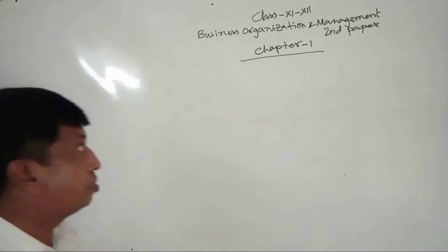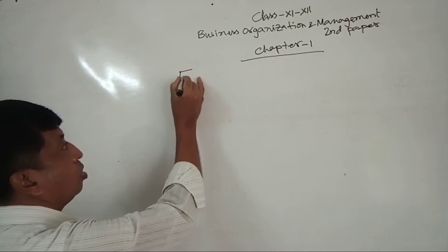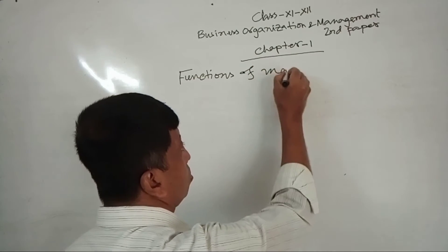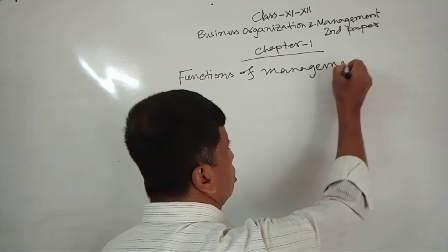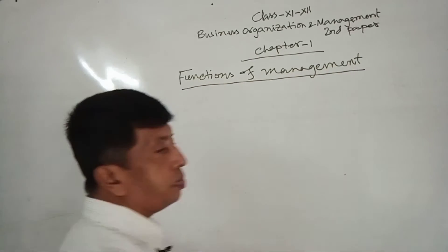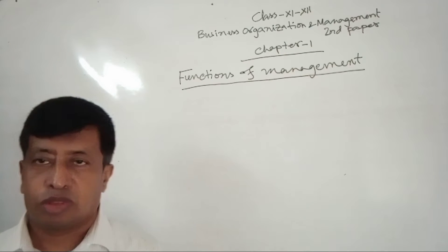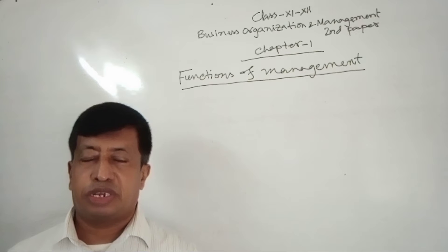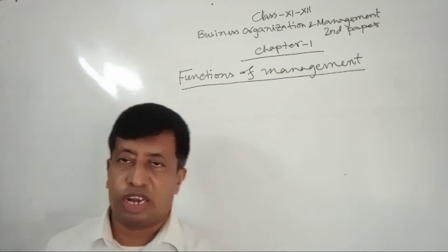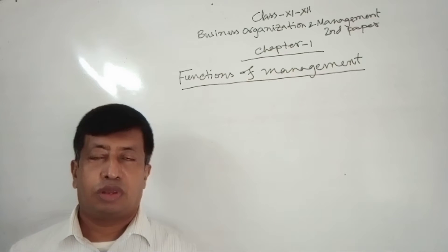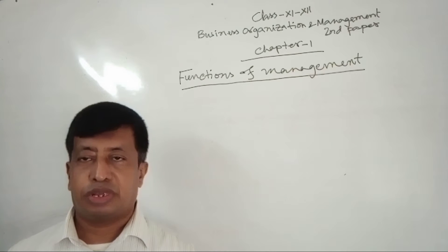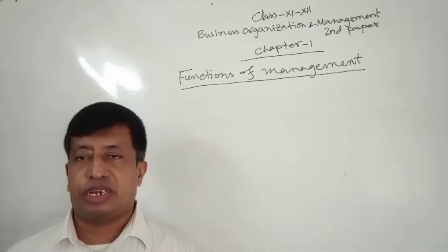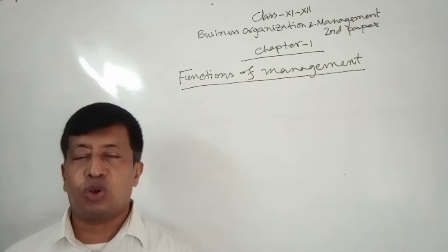Now write down in your copy. Management is part of what management does — we have learned about this in the previous class. Management is a function of executive leadership. Modern management researchers have said that to manage means to forecast and plan, to organize, to coordinate, to command and to control.